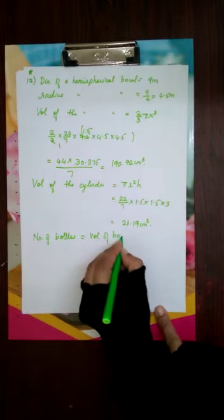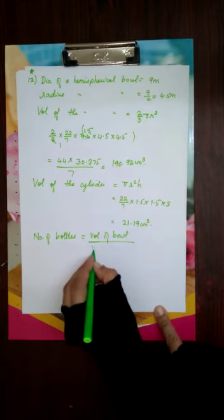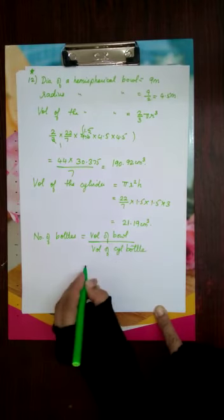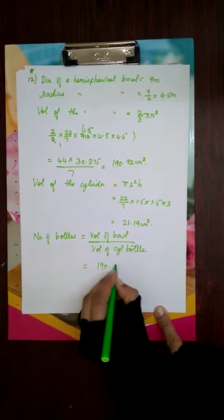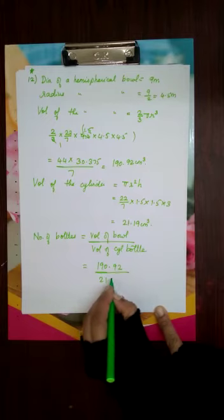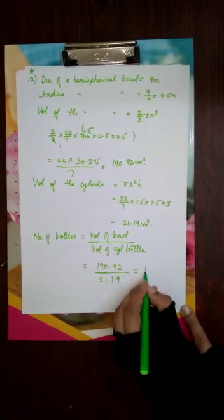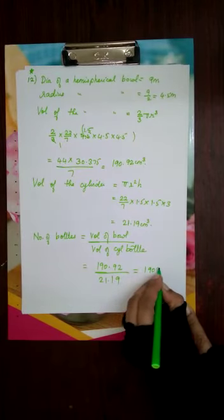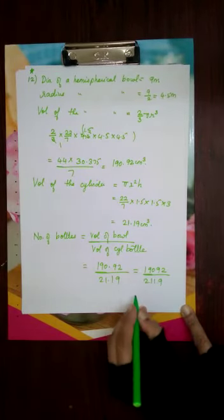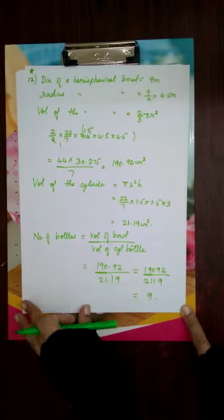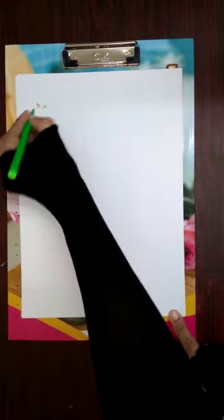Number of bottles = volume of bowl ÷ volume of cylindrical bottle = 190.92 ÷ 21.19. Removing decimals by multiplying numerator and denominator by 100 gives 19092 ÷ 2119. Dividing gives 9. So 9 bottles can be filled.